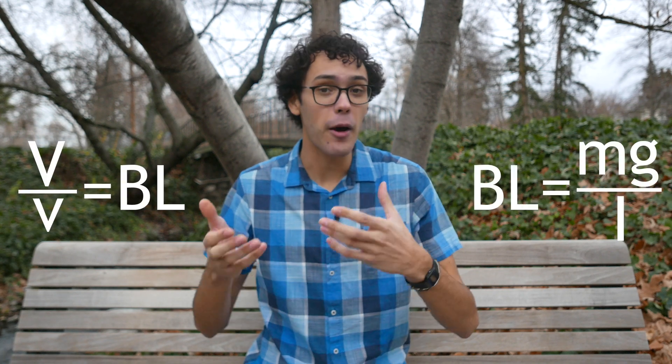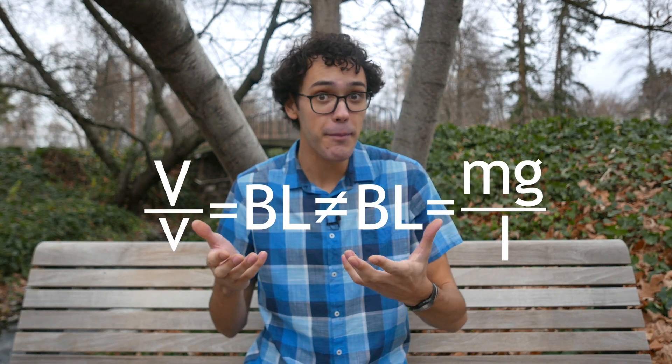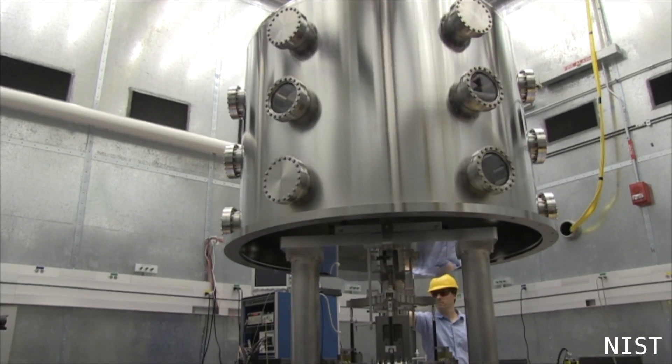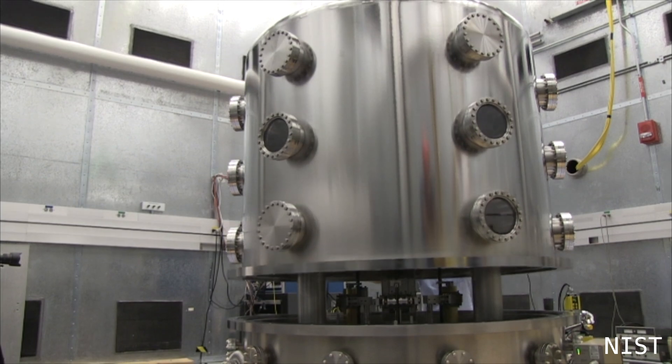And even still, there are so many other complications I've glossed over. Each measurement has sources of error that they try to mathematically correct, such as how BL is not completely the same between weighing and velocity modes. Also, the entire device is operated in vacuum, and the temperature is controlled to within thousandths of a degree.